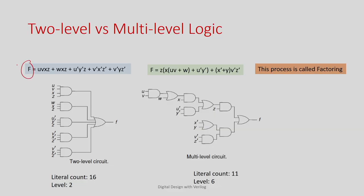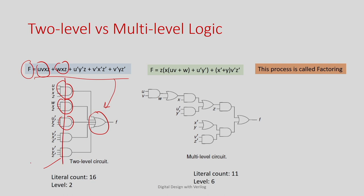You should understand the difference between two-level versus multilevel logic. Suppose I have a switching function f which is optimized by Karnaugh Map or Quine-McCluskey and we got this minimal expression. Once we represent this in a digital circuit, each product term is represented as an AND gate, and all these product terms are OR'd at the second layer. This is called two-level because there is level one and level two. Once we represent the minimal expression in sum-of-product form, the corresponding circuit representation is called two-level representation.